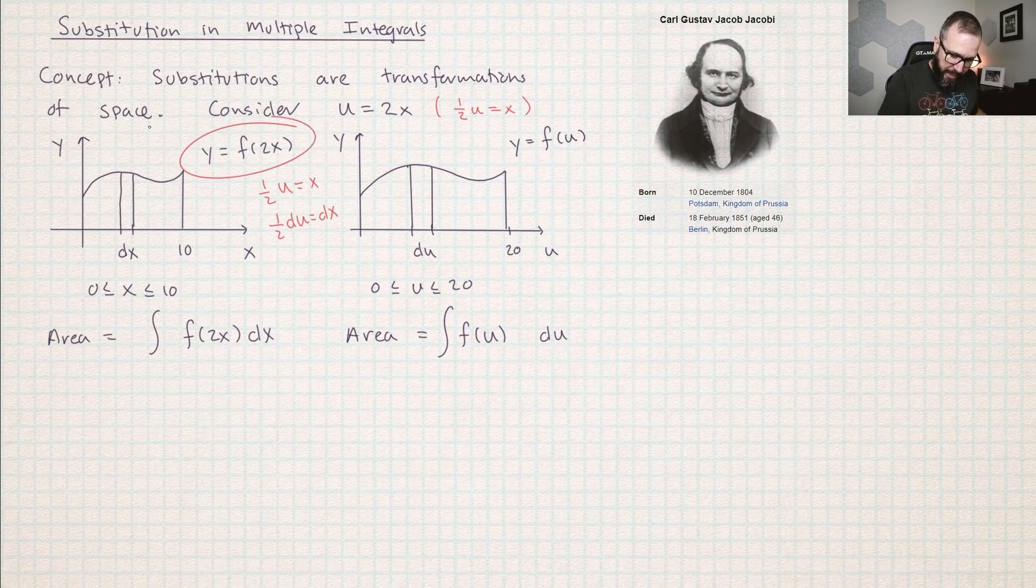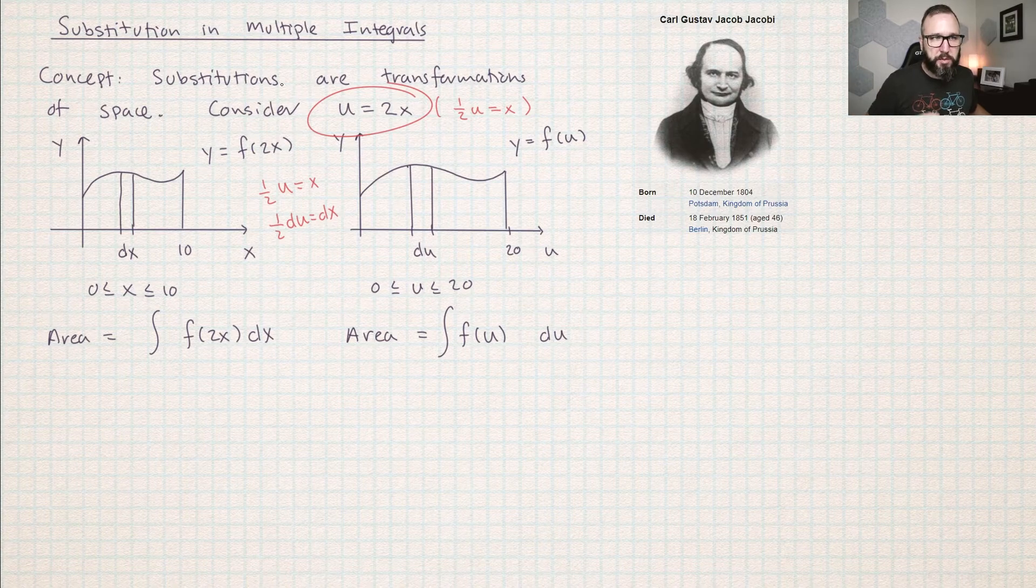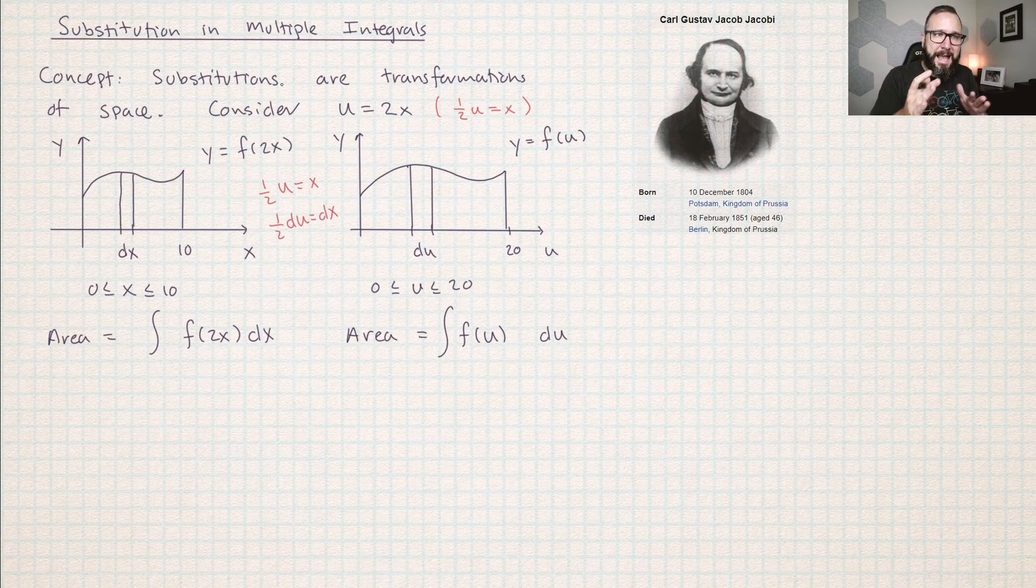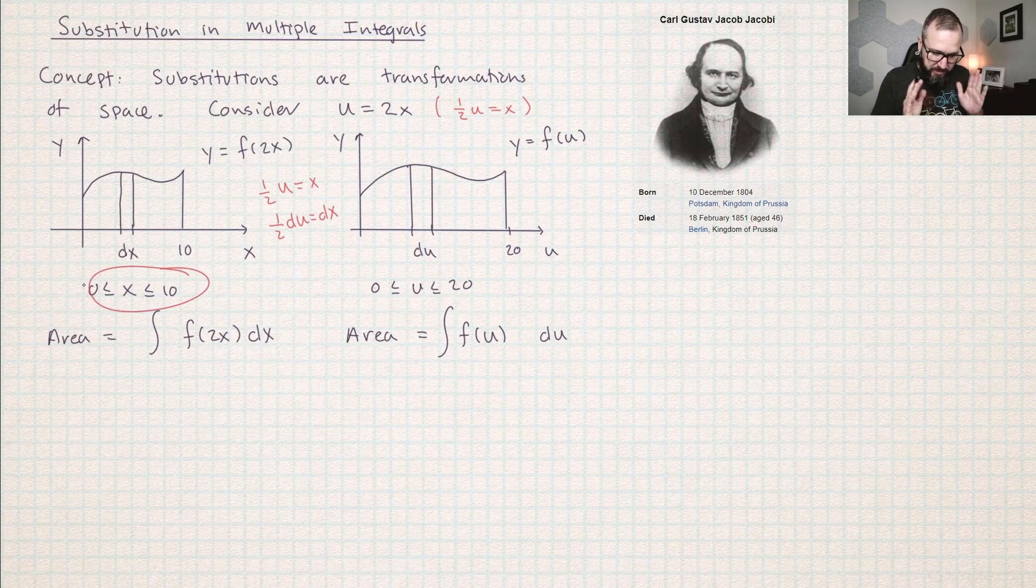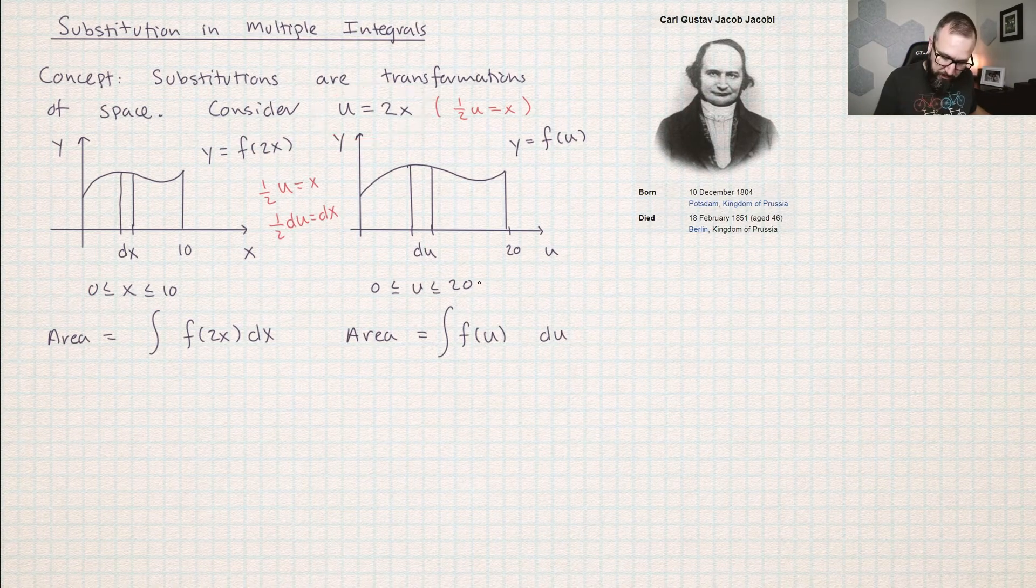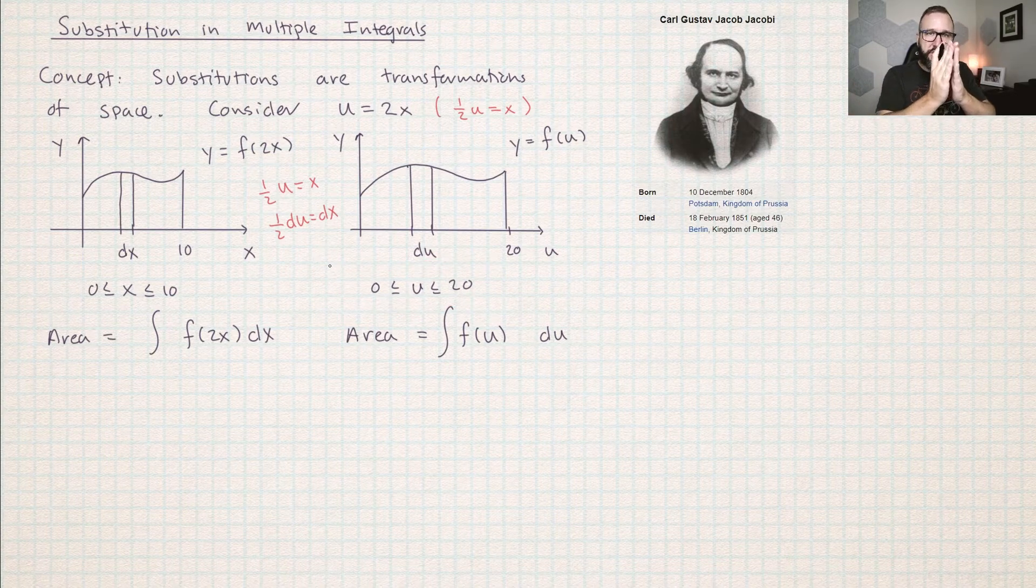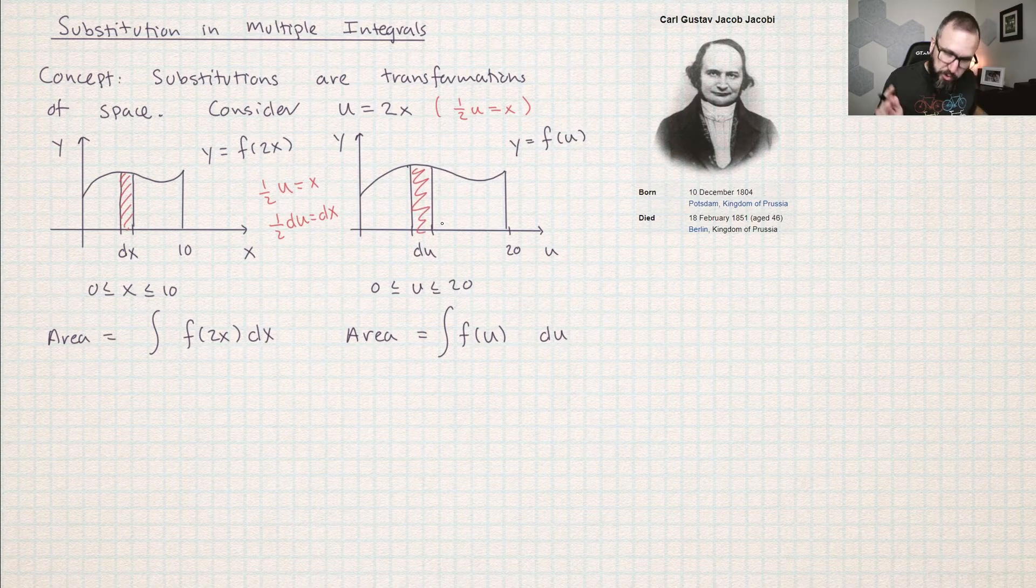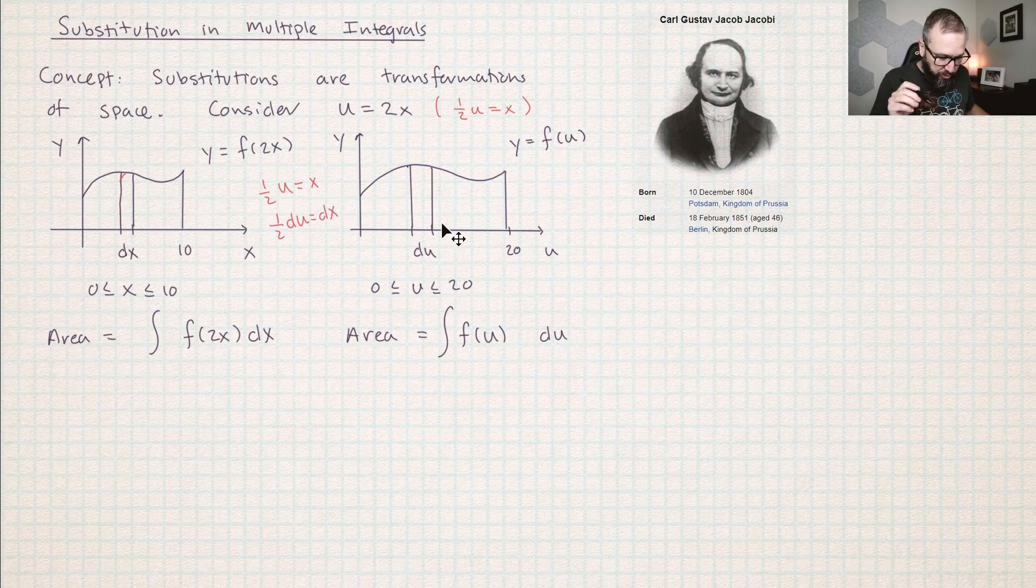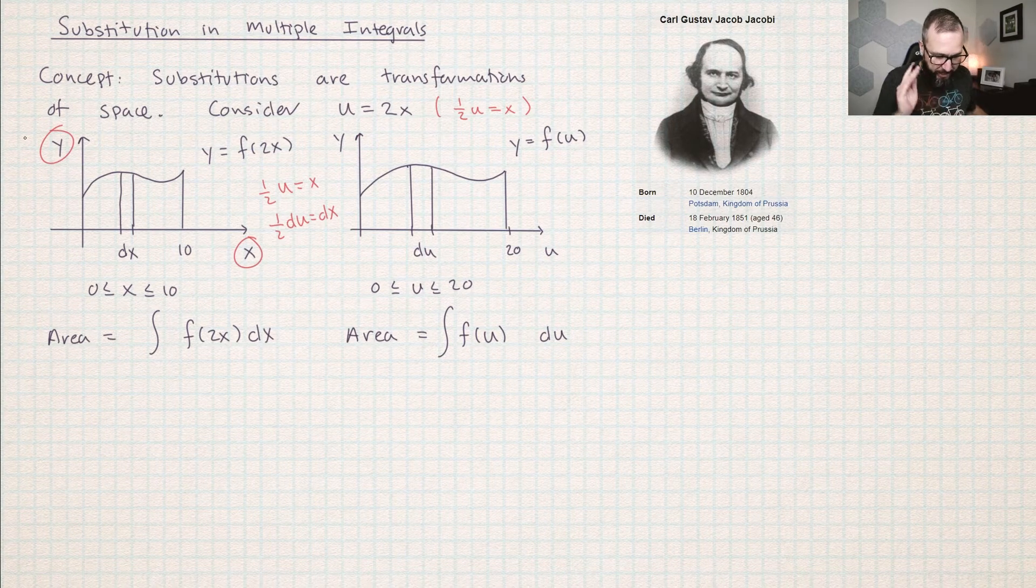Suppose that you're in a situation where you have a function, but it's not just of x, it's of 2x. You're going to make a u sub where u is equal to 2x. Let's look at the effect that has on the area you're trying to calculate. If x is between 0 and 10, then since u equals 2 times x, u is going to be between 0 and 20. The effect is it stretches out the horizontal axis. A small change in x corresponds to a larger change in u. If I just straight up calculated the area in u,y space, I would get a different answer than in x,y space.